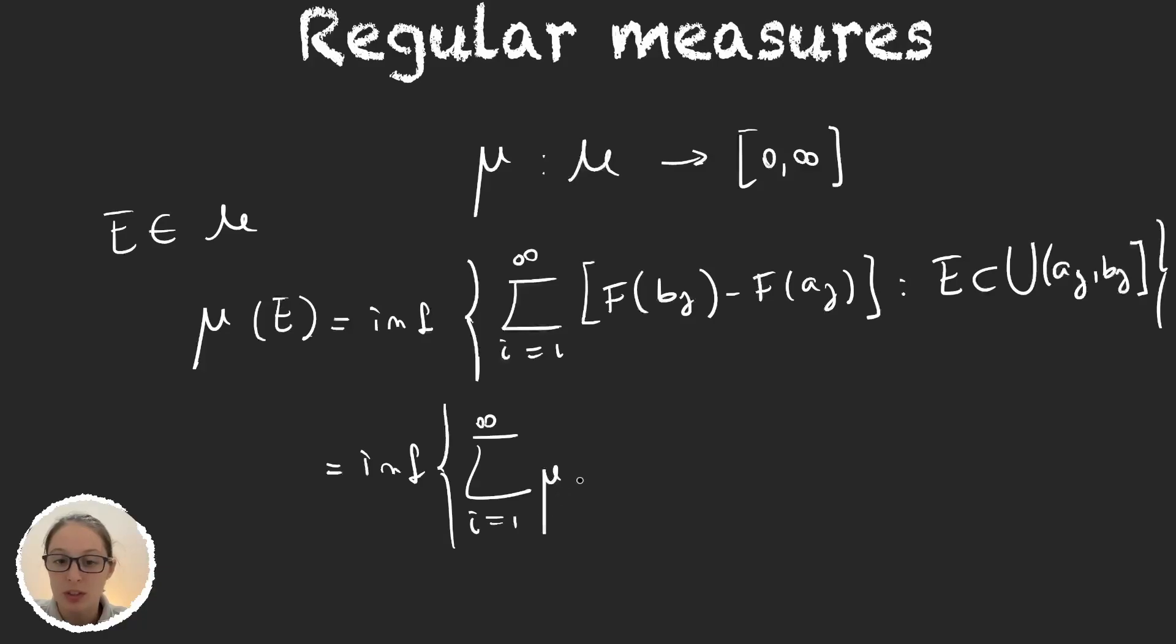Instead of writing f of b sub j minus f of a sub j, I'm going to write just the measure of the interval a sub j, b sub j. So here the sum has to go from j equals 1 to infinity, and now it's an open interval here.